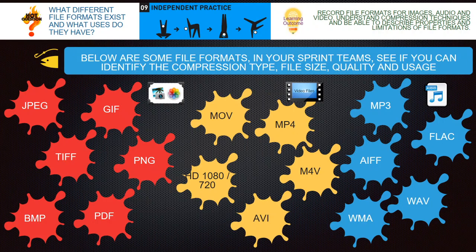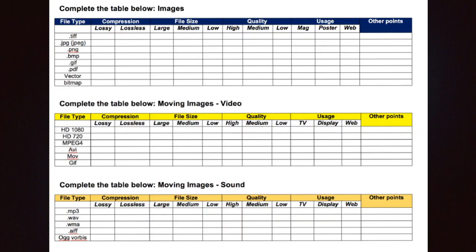We're going to do a task now. Using the file types you researched in your first task, or the ones on your screen, draw out the following tables on your notes. You're going to need to use the internet to help you find the following information about the different file types. Pause the video now, draw the tables out, and fill them in. I will check and mark this when you upload it to Teams.